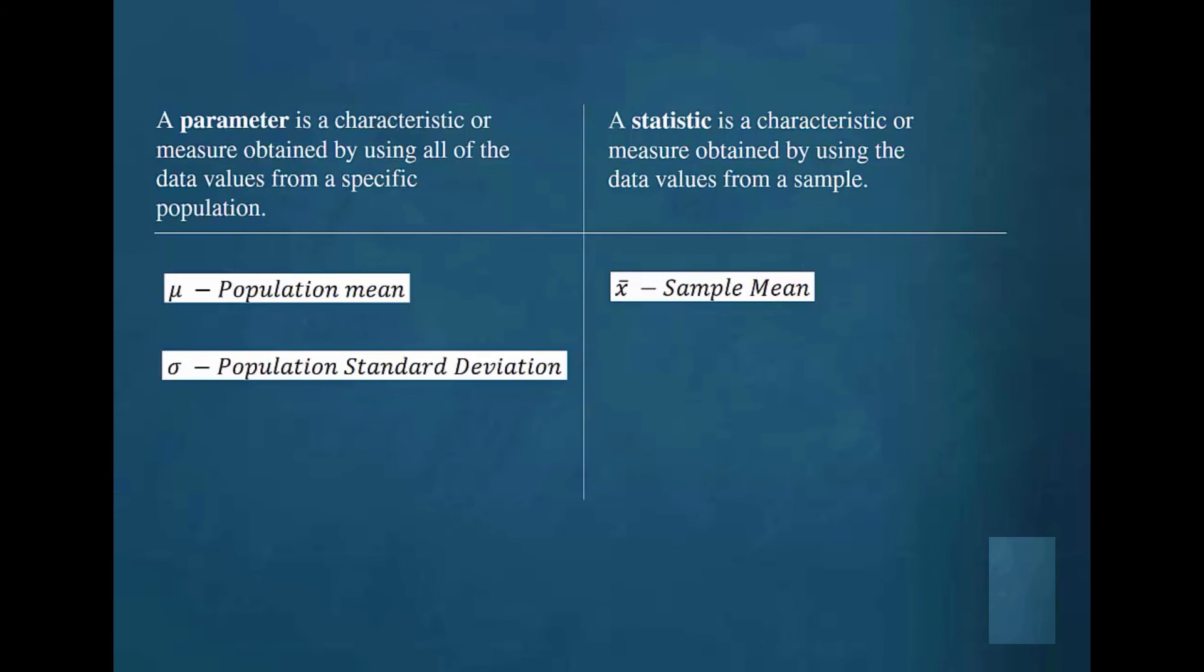The Greek letter sigma is used to represent a population standard deviation. The letter s is used to represent a sample standard deviation.